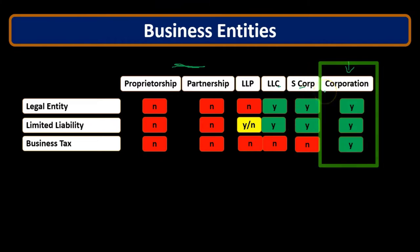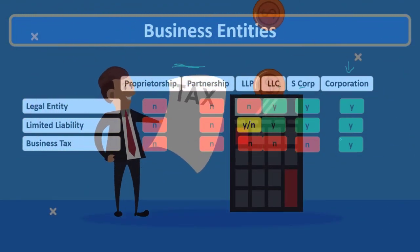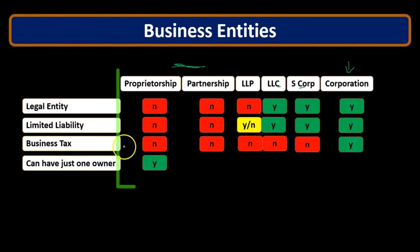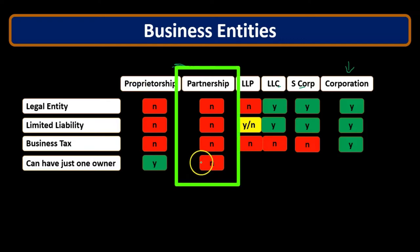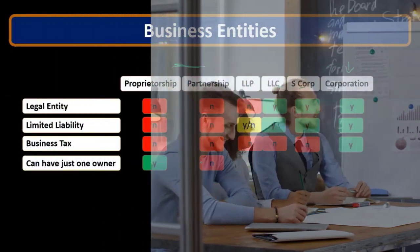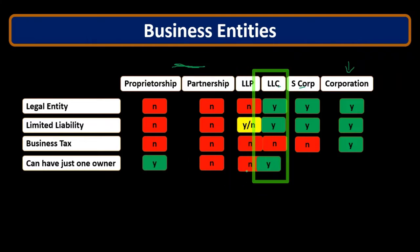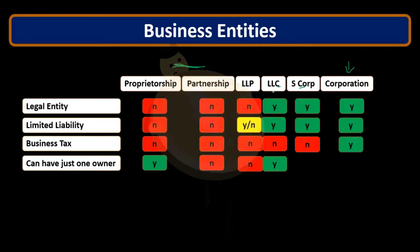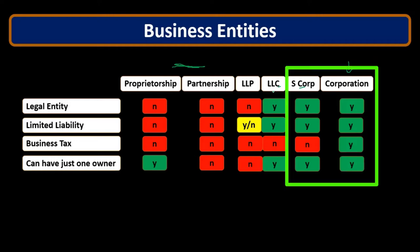Regarding single ownership: a sole proprietorship can clearly have just one owner. A partnership by definition requires two or more. The LLP cannot have just one. The LLC generally can — a sole-owner LLC is possible, though laws vary by state. The S corporation and C corporation can both have one individual owning all the stock, meaning you could incorporate and own all the stock of a corporation or S corporation.